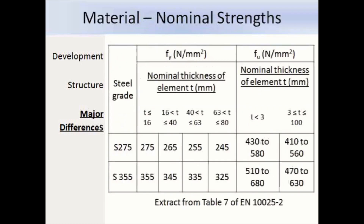The UK National Annex tells us to refer to the product standards to get the nominal values of the yield and ultimate tensile strength for hot rolled steel sections. Here is an extract from Table 7 of EN 10025 Part 2, from which you can determine the nominal strength by the thickness of the steel and the steel grade used.